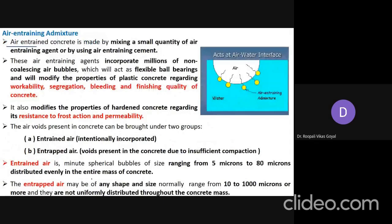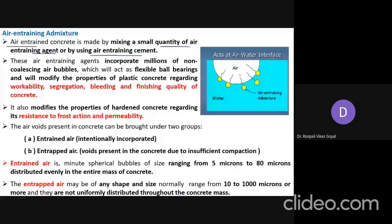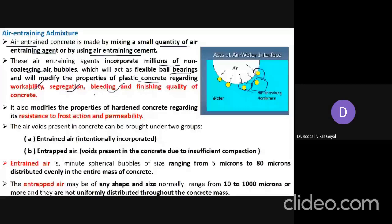Air-entrained concrete is made by mixing a small quantity of an air-entraining agent or by using air-entraining cement. When such agents are added, they incorporate millions of non-coalescing air bubbles. These bubbles act as flexible ball bearings and modify the properties of fresh (plastic) concrete regarding workability, segregation, bleeding, and finishing quality. In hardened concrete, they modify resistance to frost action and permeability.